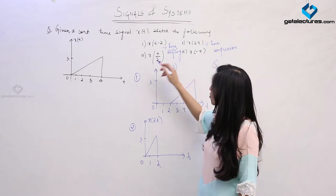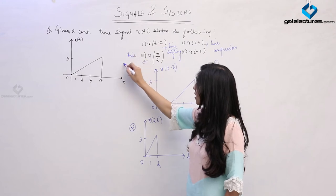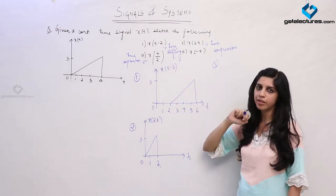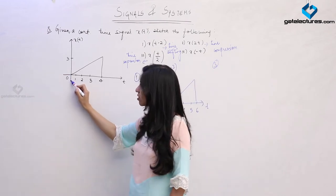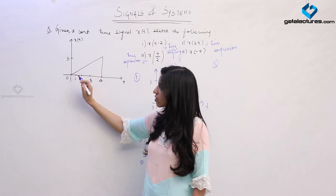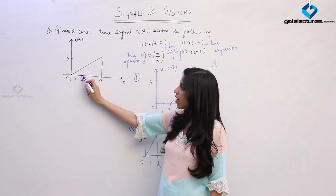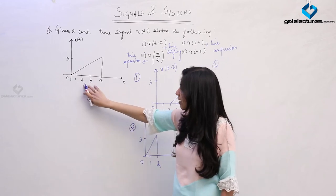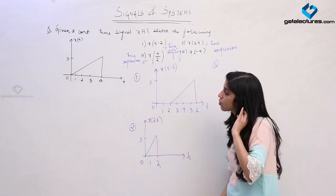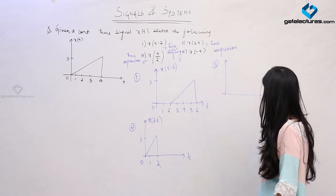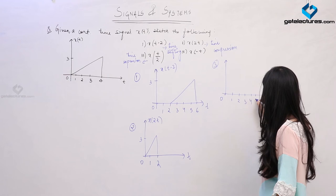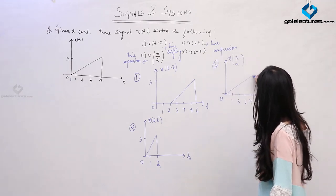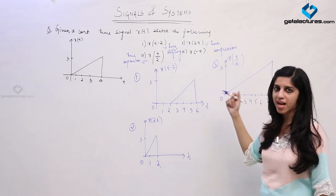The third part is just the opposite — this is time expansion. What happens is each point on the time axis is going to be multiplied by 2. Every point: 0 remains 0, but the value previously at t=1 is now going to be at t=2, and the value at t=2 is going to become the value at t=4. Every point on the time axis expands. The signal which was previously lying between 0 and 4 is now going to lie between 0 and 8. This is how the time expanded signal is going to look.